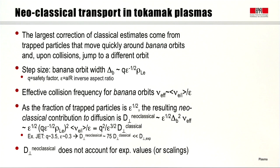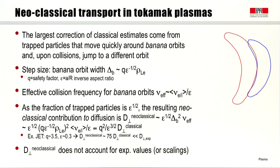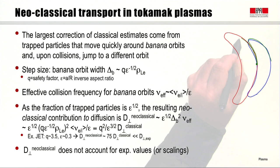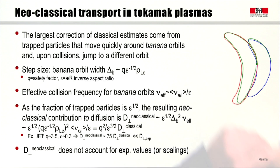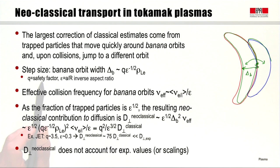Why is this relevant to transport? Because if particles move along banana orbits and collide, they may jump to a different banana orbit. This jump means that the displacement of the particle on average is not of the size of the Larmor radius anymore, but of the size of the banana orbit width, which we call delta_b. So the step size in the collision process is of the order of the banana orbit width delta_b, which equals the safety factor q times the Larmor radius divided by the square root of the inverse aspect ratio epsilon.